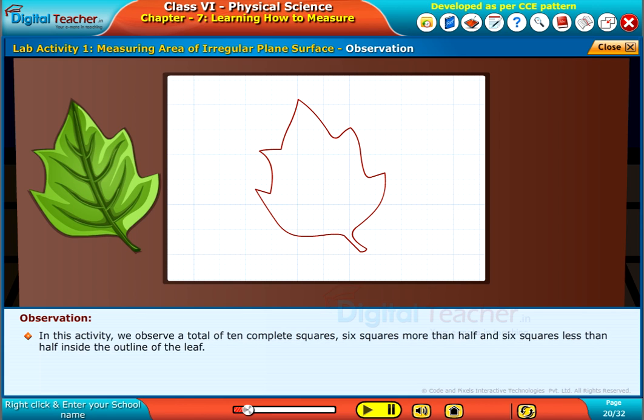In this activity, we observe a total of 10 complete squares, 6 squares more than half, and 6 squares less than half inside the outline of the leaf.